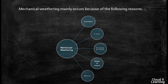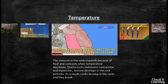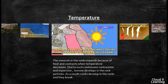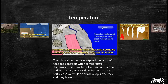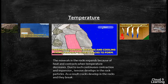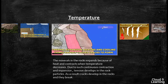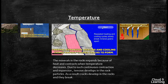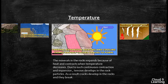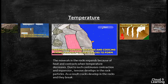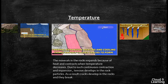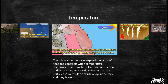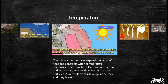Now one by one we will see them in detail. Temperature: the minerals in the rock expand because of heat and contract when temperature decreases. Due to such continuous contraction and expansion, tension develops in the rock particles. As shown in this figure, cracks develop in the rocks and they break. Weathering of this type is common in hot deserts and in areas where the diurnal range of temperature is higher. Diurnal means daytime.